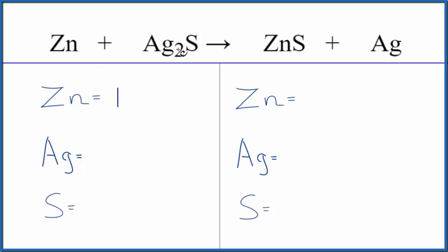We have one zinc, two silver, and one sulfur atoms. On the product side we have one zinc, one silver, and one sulfur.